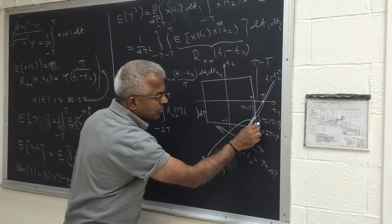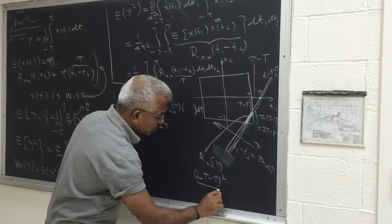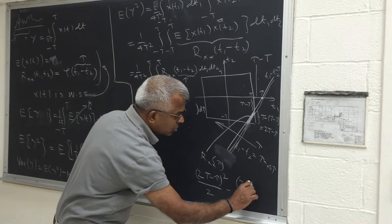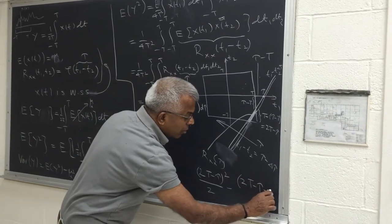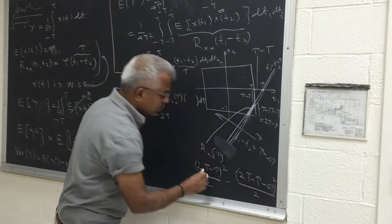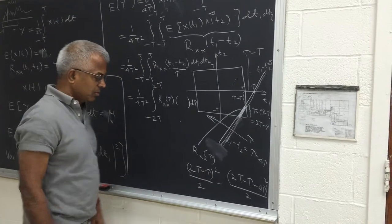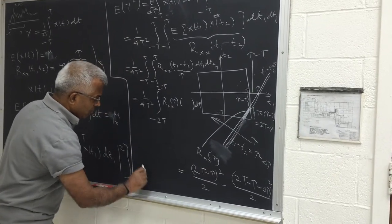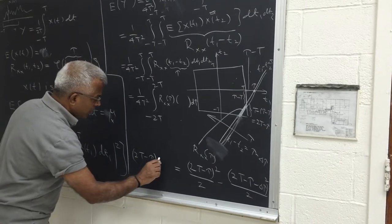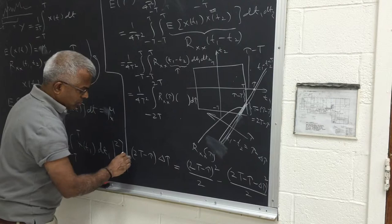So we already computed the area of this big triangle. This side is 2t minus τ. The area is (2t minus τ) squared over 2 for one triangle, minus the area of the smaller triangle, which is (2t minus τ minus δτ) squared over 2. This is because base and altitude are the same, so base multiplied by altitude divided by 2.